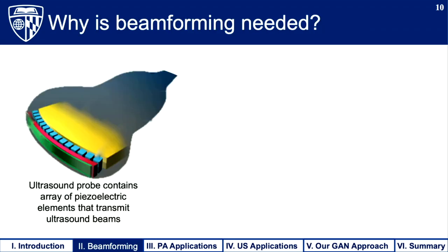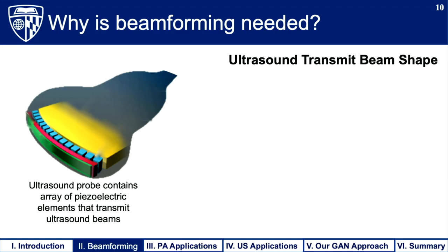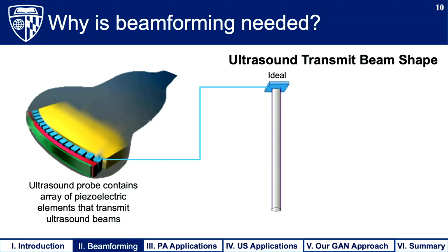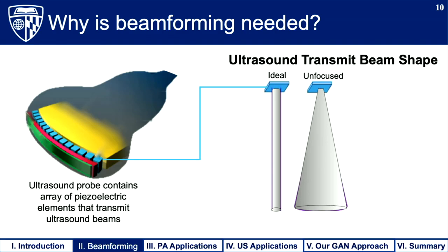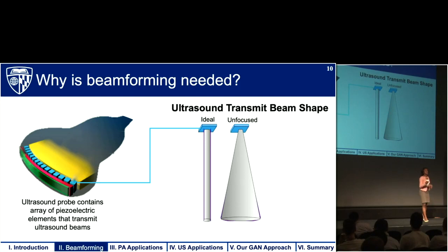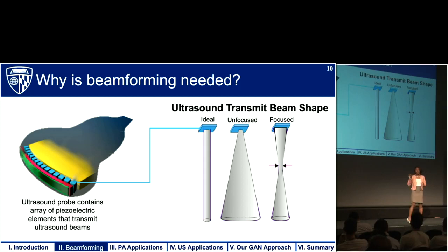Why exactly is beamforming needed? The probe contains an array of piezoelectric elements used to transmit mechanical pressure waves into the body. Ideally we want the transmitted beam to be infinitely narrow as depth increases, but due to the physics of wave propagation we instead get a beam that starts off narrow and then widens as depth increases. Beamforming is our attempt to give us something that looks more like the ideal beam shape at a specific focal depth.